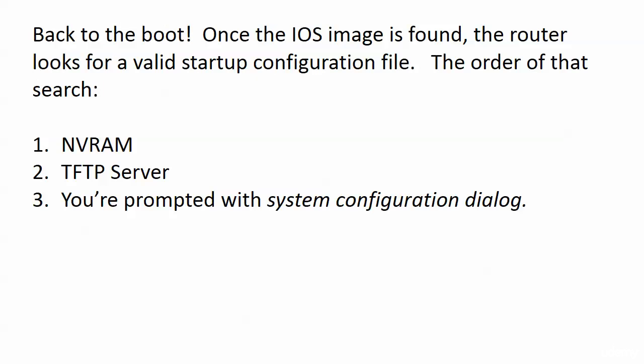Once the IOS image is found, the switch needs a valid startup config file. The search order is: first, NVRAM; second, a TFTP server; and third, if none is found, you're prompted with the system configuration dialog — which you'll see exactly what it is coming up next.